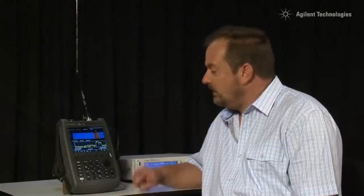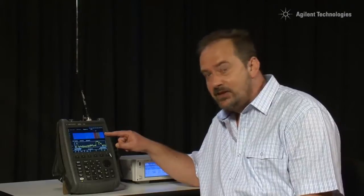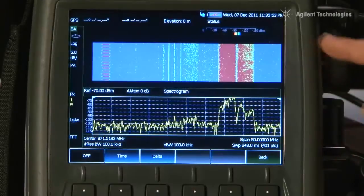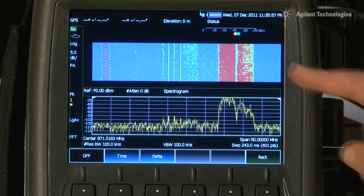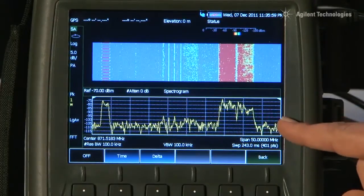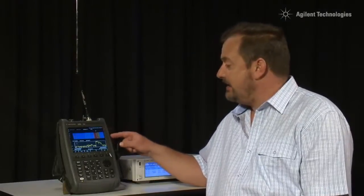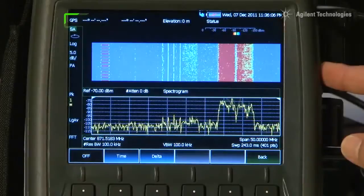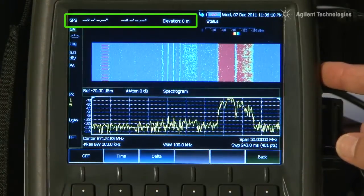And best of all, every captured trace can be logged and recorded into either the FieldFox's internal memory or onto a USB memory stick or the mini SD card. And as well as storing the frequency and amplitude data, it also stores the date and the time, and if we have a GPS receiver plugged in, it will even store the lat and long position of where that trace was captured.